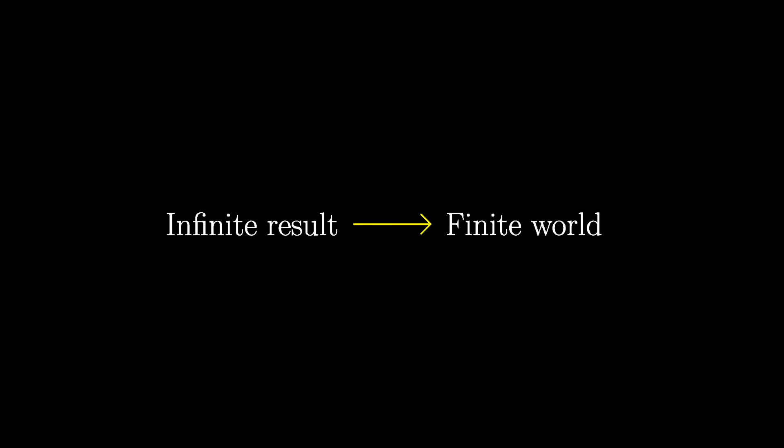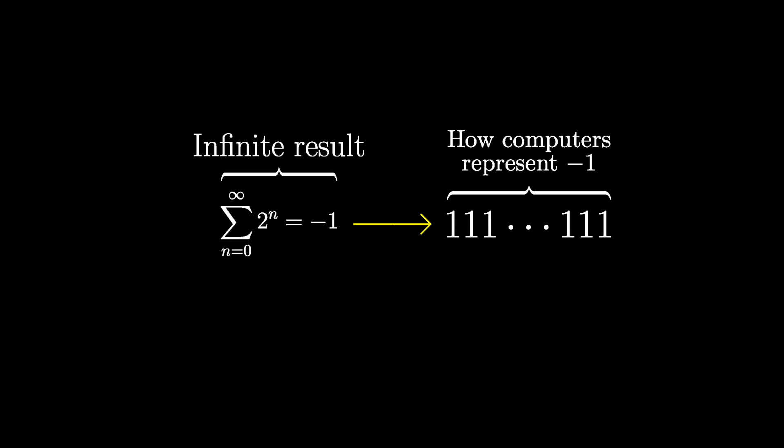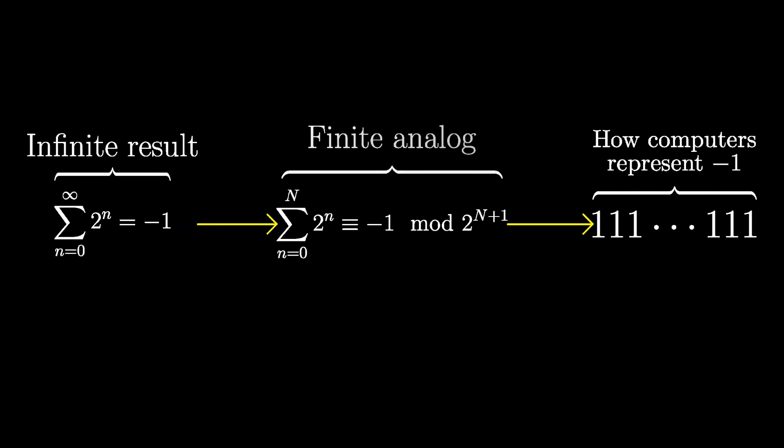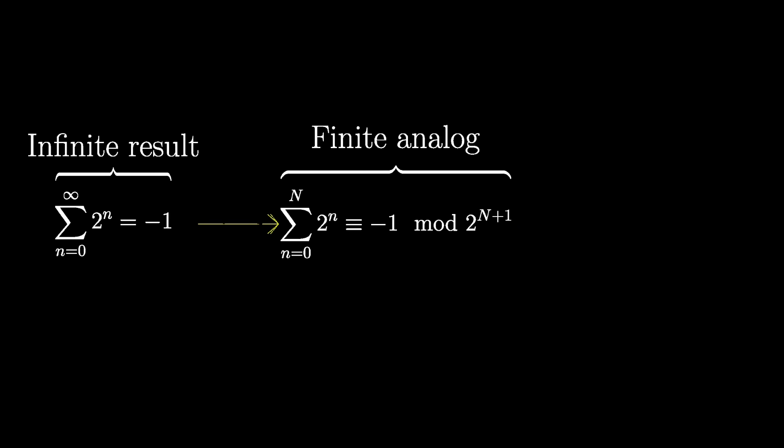Another example that several astute commenters on the inventing math video pointed out is the connection between the divergent sum of all powers of 2 and the way that the number negative 1 is represented in computers with bits. It's not so much that the infinite result is directly useful, but instead the same patterns and constructs that are used to define and prove infinite facts have finite analogs, and these finite analogs are directly useful. But the connection is often deeper than a mere analogy.